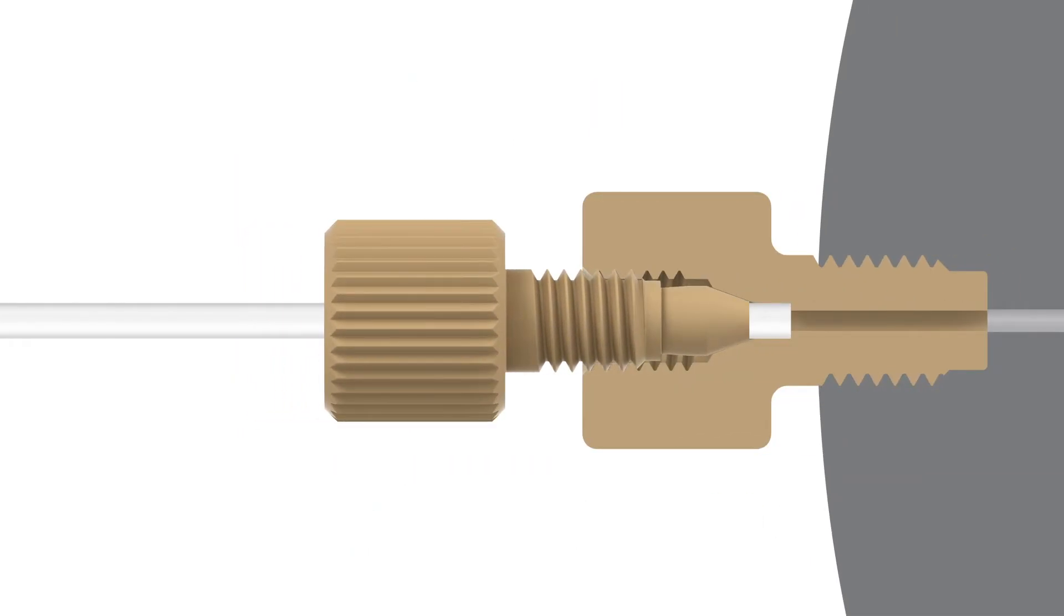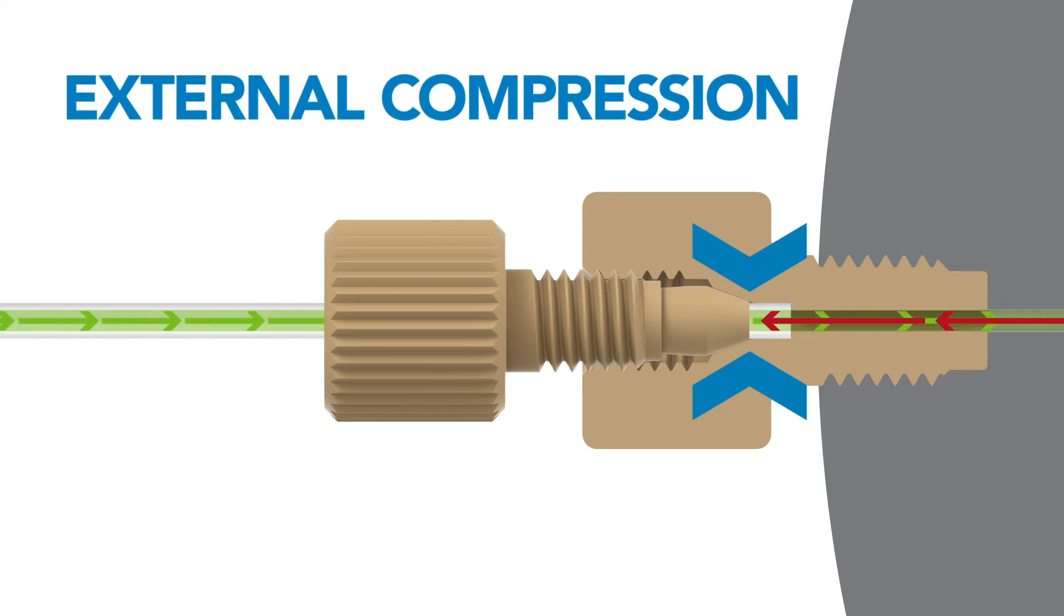Fittings have two primary functions. They prevent liquid or gas from leaking out of the flow path, and they hold the tubing in place against the opposing pressure in the flow path through a process called external compression.